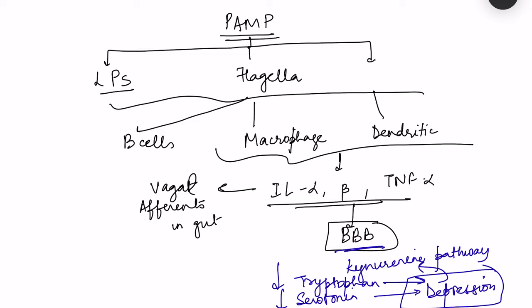Cytokines also act on microglia in the brain, causing further cytokine release and exaggeration of the inflammatory condition. There is much ongoing research on gut-brain axis modulation. For example, Clostridium bacteria produce a metabolite that inhibits dopamine beta-hydroxylase, the enzyme converting dopamine to epinephrine, resulting in increased dopamine levels that may be responsible for increased psychotic episodes in schizophrenia.